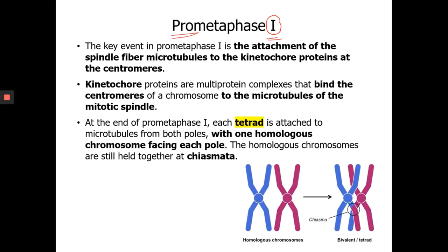The key event that happens in Prometaphase I is the attachment of spindle fibers to kinetochore proteins. The kinetochore proteins are located at the centromere — the spot where everything narrows, almost like you're pinching the two sister chromatids. Spindle fiber microtubules come and attach themselves to these kinetochore proteins.